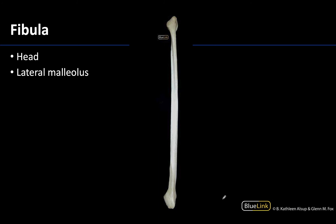Looking at the fibula that we couldn't see very well on that first image, you can see it is a very long but very thin bone. It will have a more robust proximal end and distal end — the proximal end is the head and the distal end is the lateral malleolus, so it can be difficult to tell which way is up and which is down. The head is a bit more triangular and bulbous, whereas the lateral malleolus is more tapered in appearance and a bit longer in its projection.